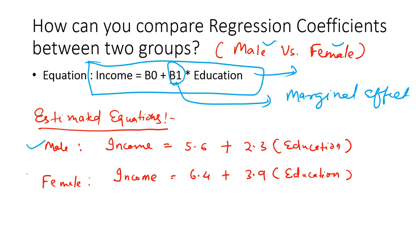Let us write out the equations for male and female populations separately. We have estimated the equations using a BY statement. For male: income = 5.6 + 2.3 × education, so beta 1 is 2.3. For female: income = 6.4 + 3.9 × education, so beta 1 is 3.9. Now it clearly shows 3.9 > 2.3, but we cannot conclude that the marginal effect of education for female is higher than for male.